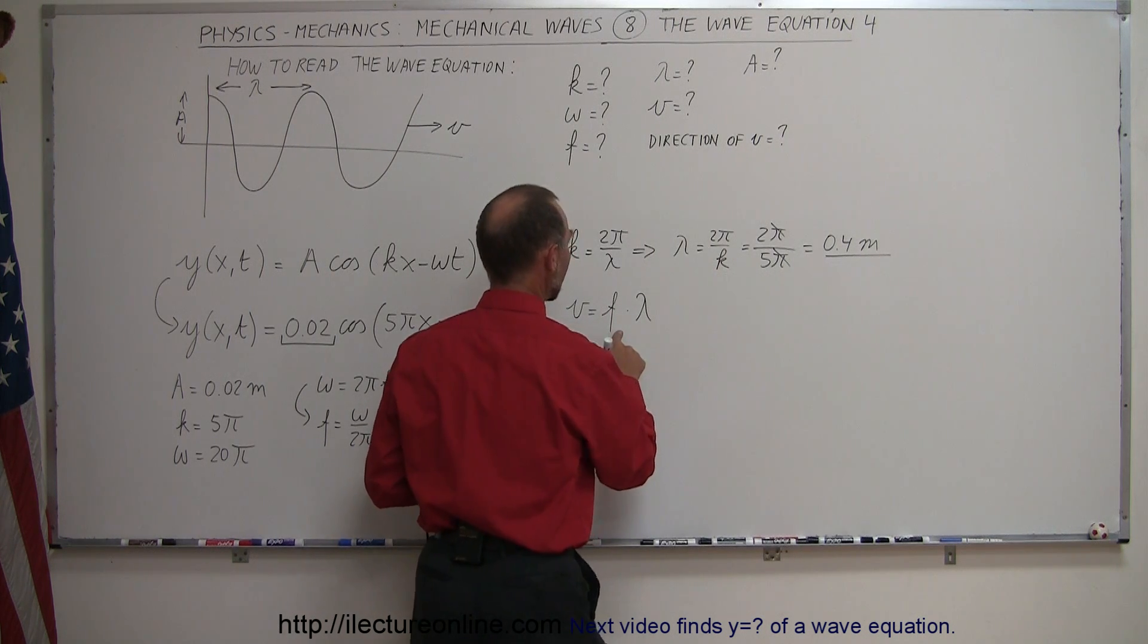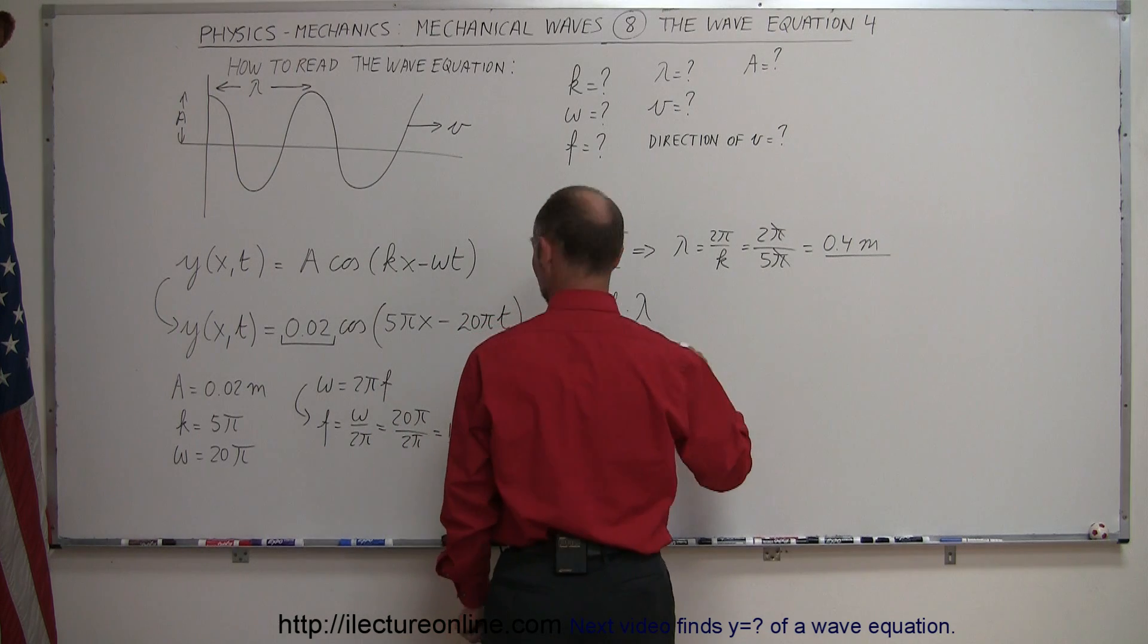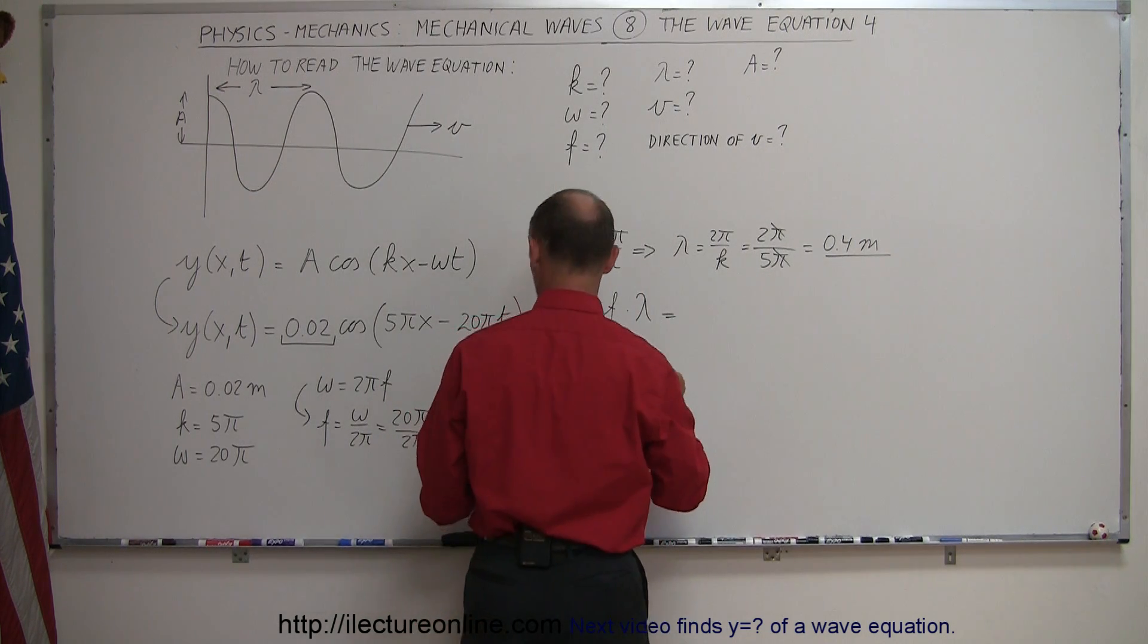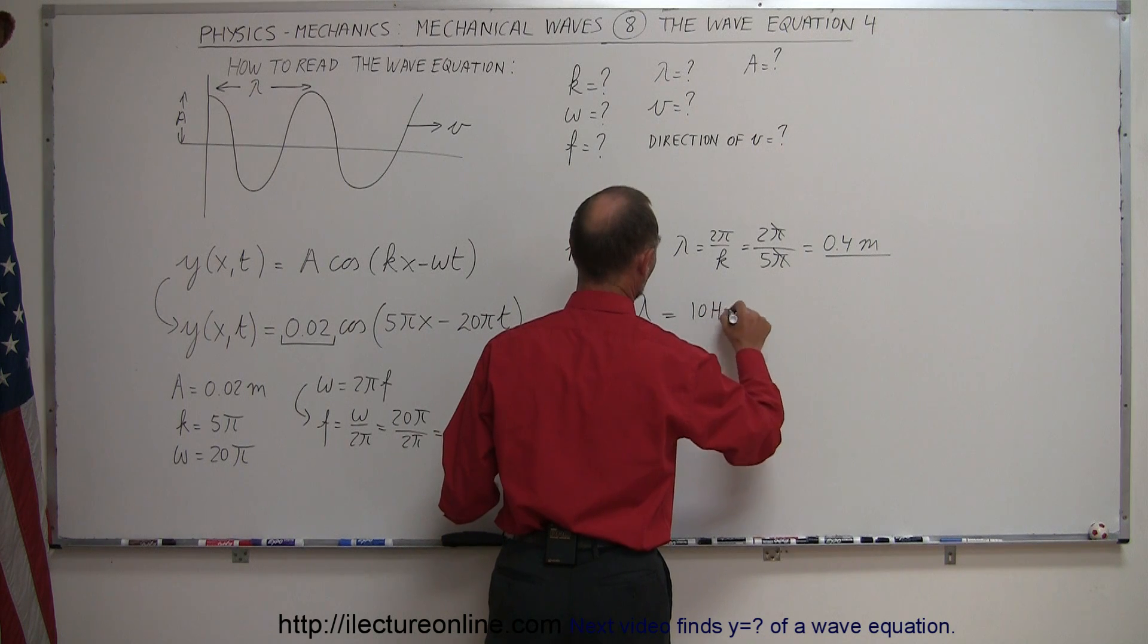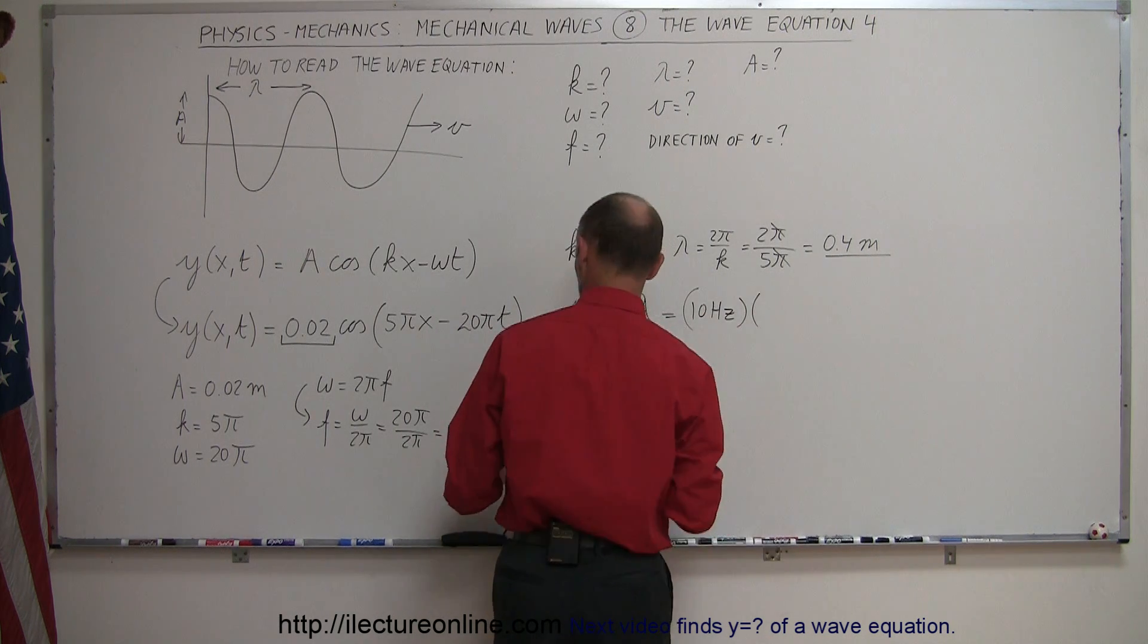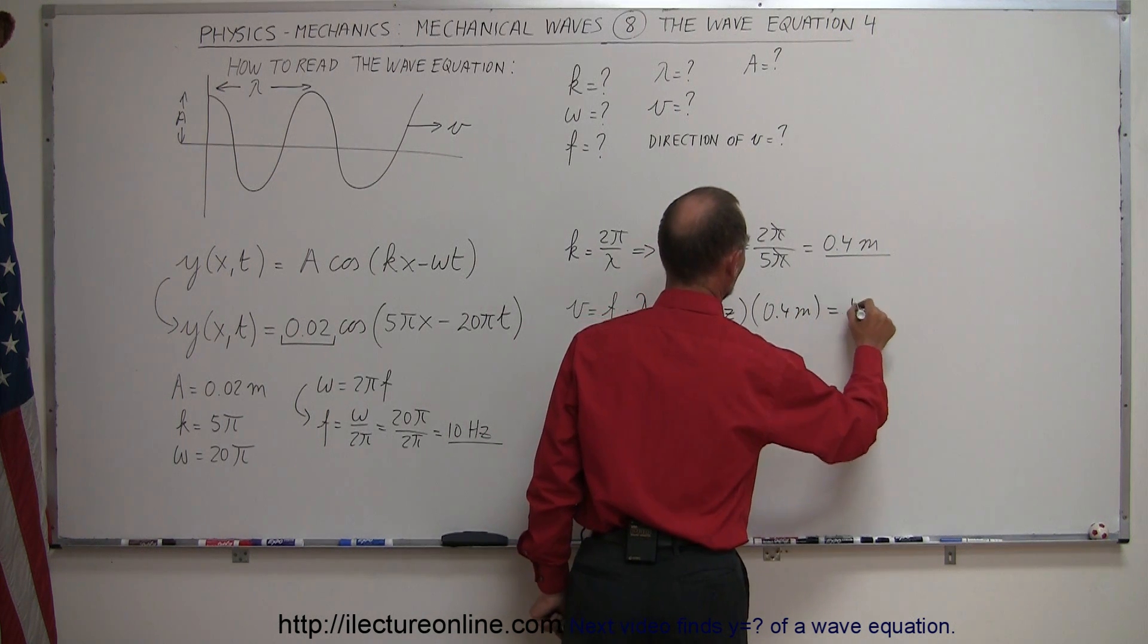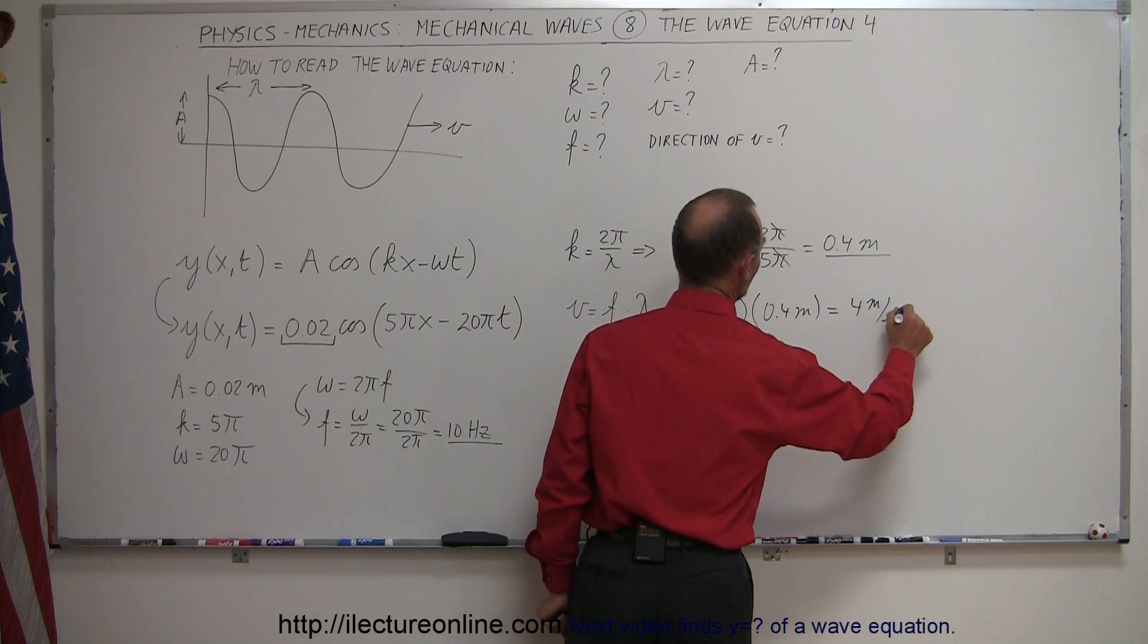And the frequency that we found, and the wavelength, let's see here, that we found as well. So this is equal to the frequency of 10 hertz times the wavelength of 0.4 meters, so that would be equal to 4 meters per second.